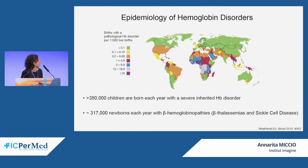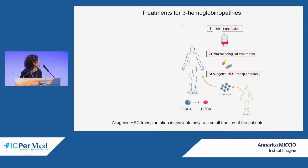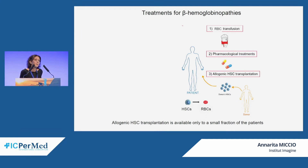More than 350,000 children are born every year with genetic hemoglobin disorders, and most of them are affected by beta-hemoglobinopathies. Most of these newborns are affected by sickle cell disease. Typical treatments include transfusion of red blood cells from healthy donors and pharmacological treatment, which are not equally effective in all patients and are lifelong therapies. The only curative and definitive treatment is transplantation of hematopoietic stem cells from a compatible donor.